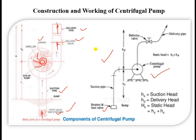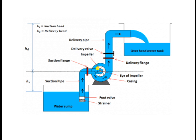You may have observed in your homes and buildings that we use a centrifugal pump attached to an electric motor, since the electric motor is the prime mover. We can also use a generator or IC engine. Because the pump requires external power, it is known as a power absorbing device. It is used to lift water from a ground-level tank to the top of a building and in various other applications.